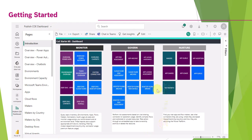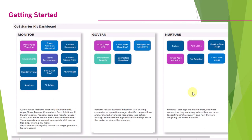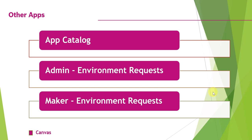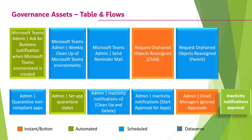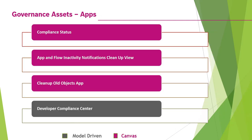This is the Power BI dashboard for governance where you can monitor different apps, govern apps, and work with nurture components — this is the new view recently introduced by Microsoft. Similarly, just as there were tables and flows in the admin/core components, there are also tables and flows in the governance assets. With respect to governance assets, we have different apps — for example, compliance status and cleanup old objects, which are canvas apps, and developer compliance center, which is a model-driven app.